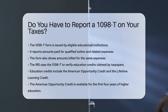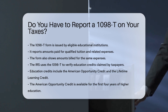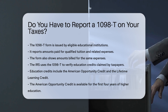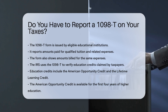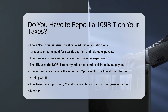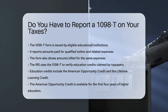Education credits include the American Opportunity Credit and the Lifetime Learning Credit. The American Opportunity Credit is available for the first four years of higher education. The Lifetime Learning Credit can be used for tuition and fees for undergraduate, graduate, and professional degree courses.